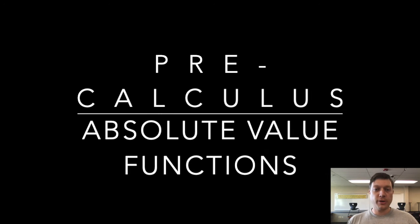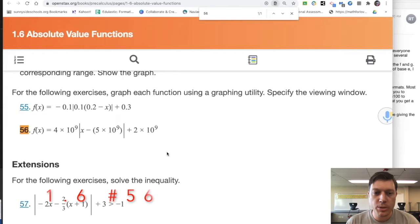Hey everyone. Absolute value functions from our 1.6 category. We're talking about number 56.